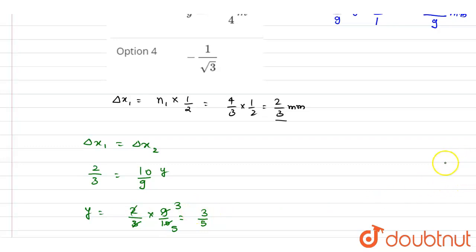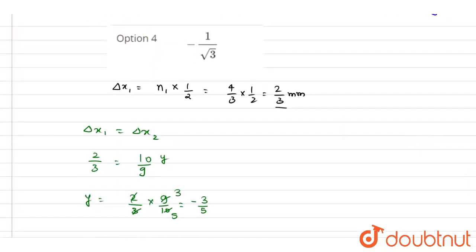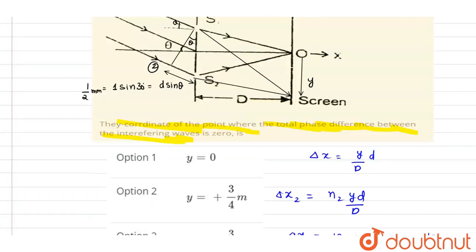And you can see already, the y is in downward direction. So if you write down the coordinate, it will be negative. This we wrote the magnitude. So minus 3 by 5.